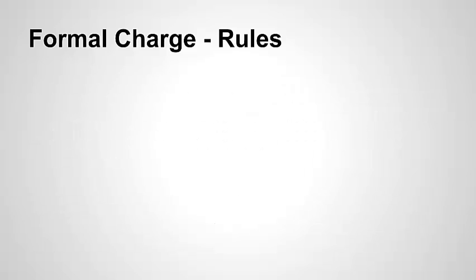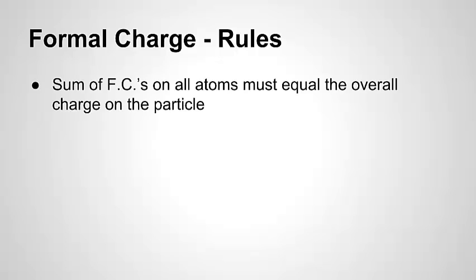Now there are some rules to consider when figuring out the formal charge of your atoms. The total of all the formal charges on all the atoms in a molecule has to equal the charge on the particle. If it's a neutral molecule, then all the formal charges have to add to zero. If it's a polyatomic ion which has a charge, then the sum of the formal charges has to add to that charge.